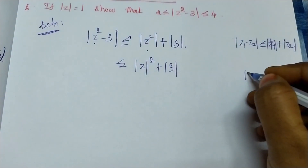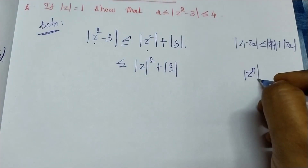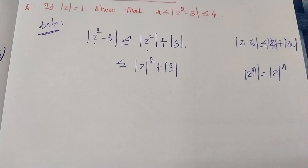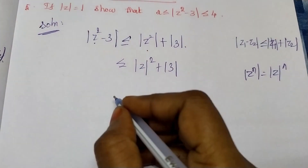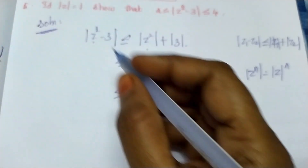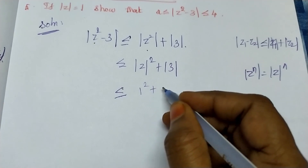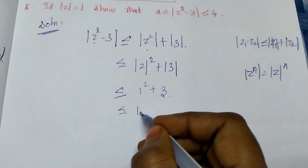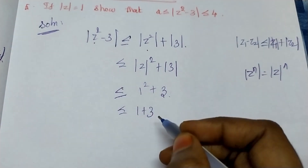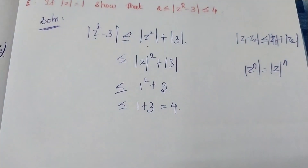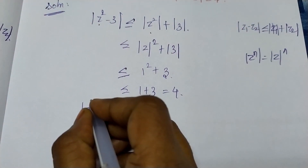By the property, mod z to the power n equals mod z whole power n, for any integer n. Using this property, mod z squared equals mod z to the value 1 squared, plus mod 3, which equals 1 plus 3, giving a value of 4. So mod z squared minus 3 is less than or equal to 4.